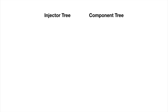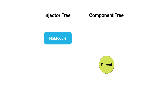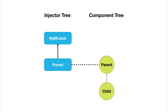An Angular application will have a tree of injectors mirroring the component tree. On the left-hand side you see the injector tree, and on the right-hand side the component tree. We'll always have a top-level parent injector attached to our NgModule. Then we'll have child injectors descending in a hierarchy matching the component tree. So if a parent component has a child component, that child component will have a child injector stemming from the parent injector.